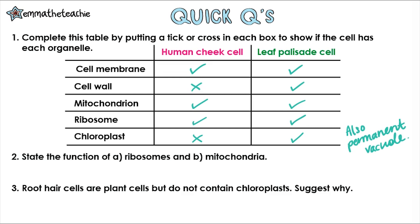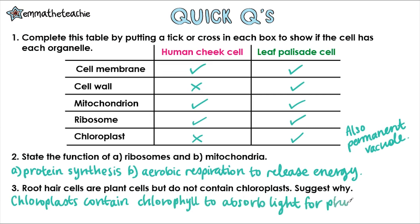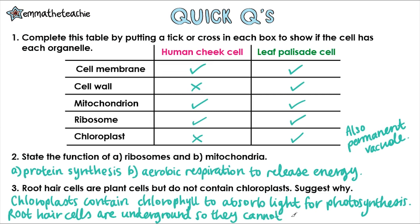Number two: state the function of A, ribosomes, and B, mitochondria. Well, ribosomes carry out protein synthesis, or making proteins. Mitochondria are for aerobic respiration to release energy for the cell — it's really important that you got all of those words into your answer. Number three: root hair cells are plant cells but do not contain chloroplasts — suggest why. Chloroplasts contain chlorophyll to absorb light for photosynthesis, but root hair cells are part of the root, so they're underground and therefore cannot absorb any light. So it would be a waste of the plant's energy and materials to create chloroplasts.